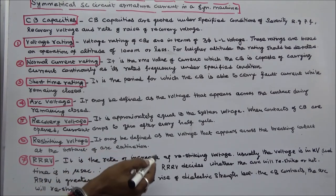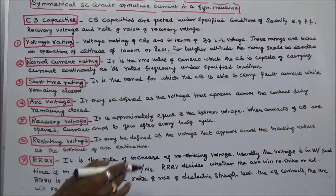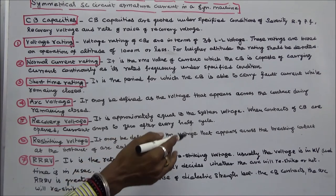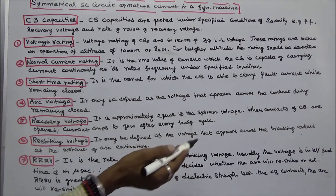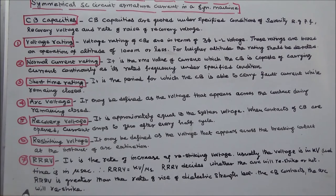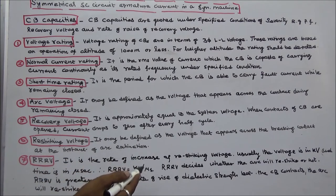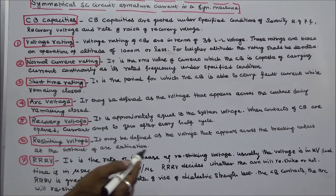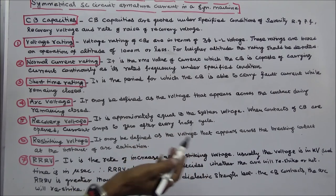The rate of rise of recovery voltage decides whether the arc will restrike or not. If the rate of rise of recovery voltage is greater than the rate of rise of dielectric strength between the circuit breaker contacts, the arc will restrike.